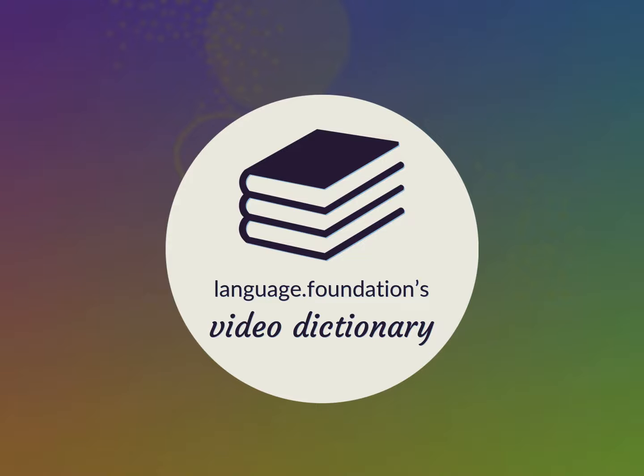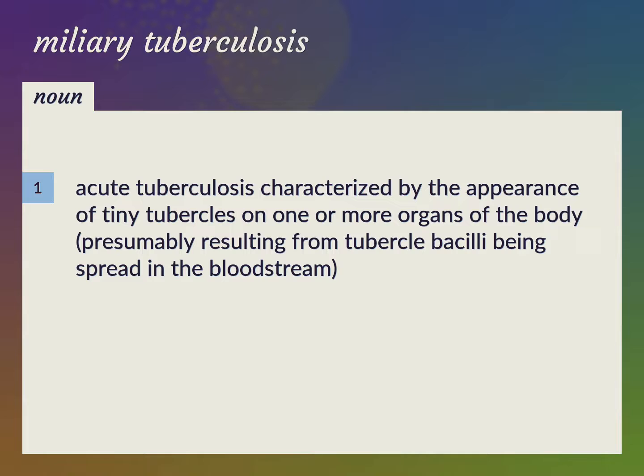Language.Foundation's Video Dictionary, helping you achieve understanding. Acute tuberculosis characterized by the appearance of tiny tubercles on one or more organs of the body, presumably resulting from tubercle bacilli being spread in the bloodstream.